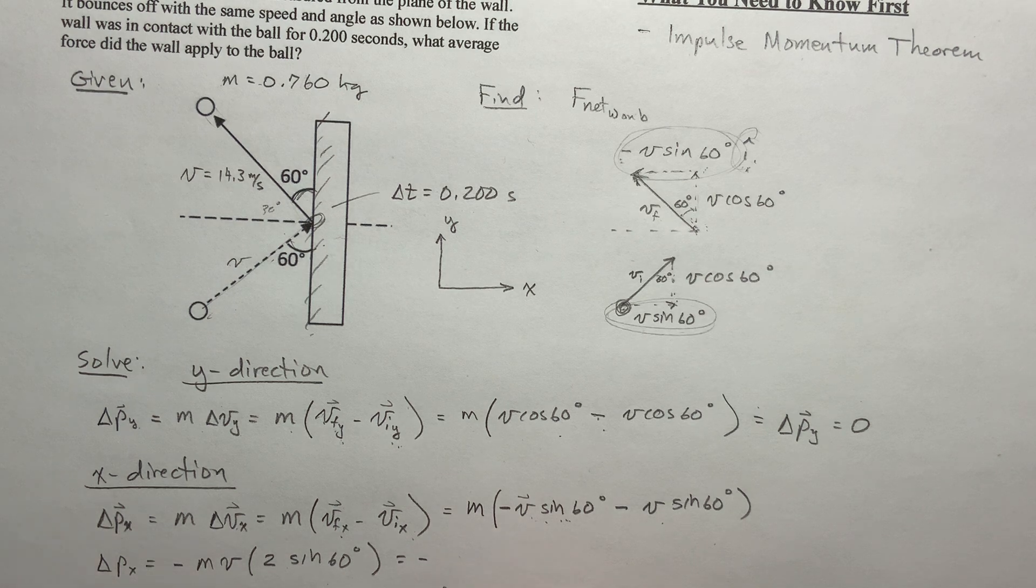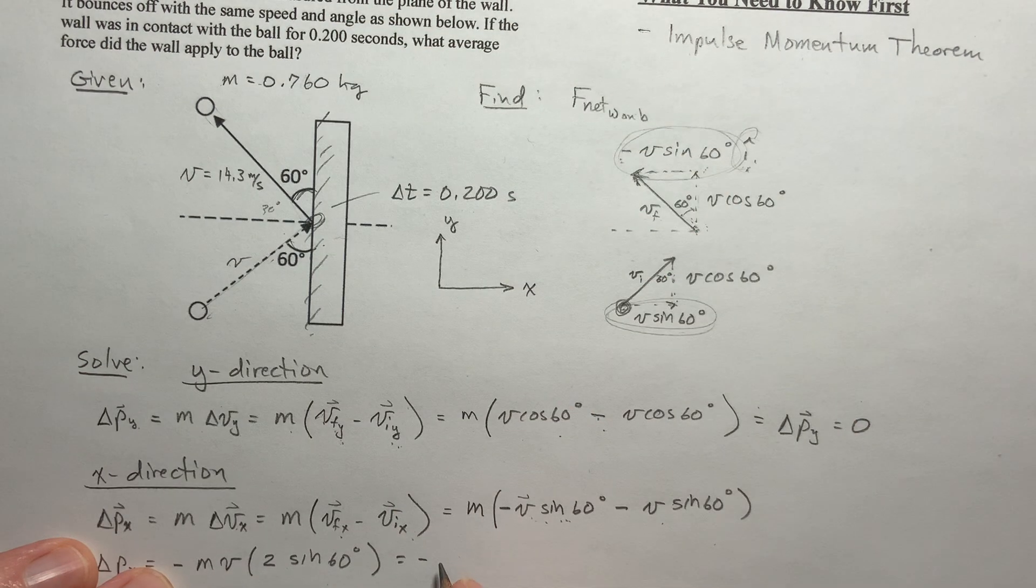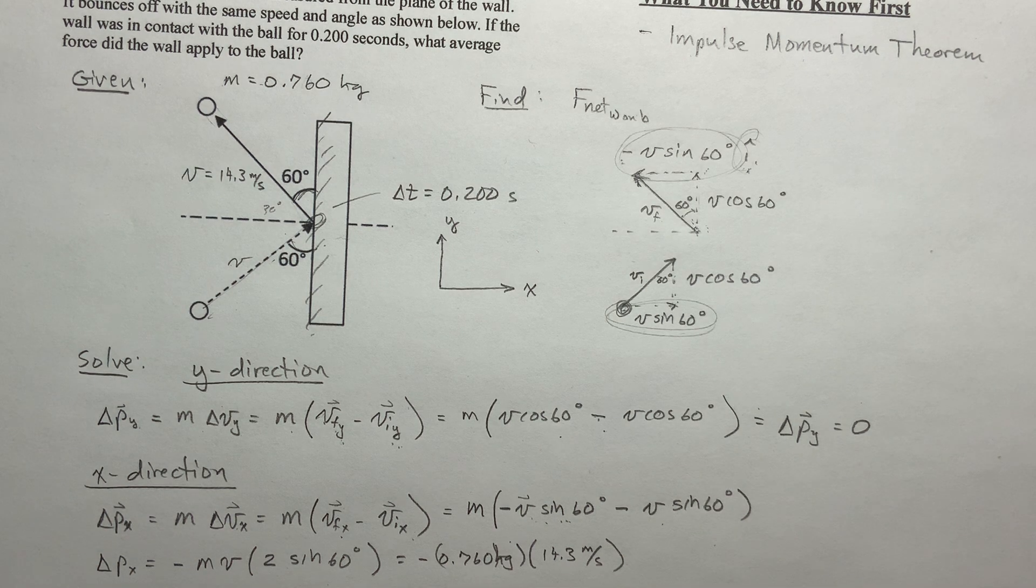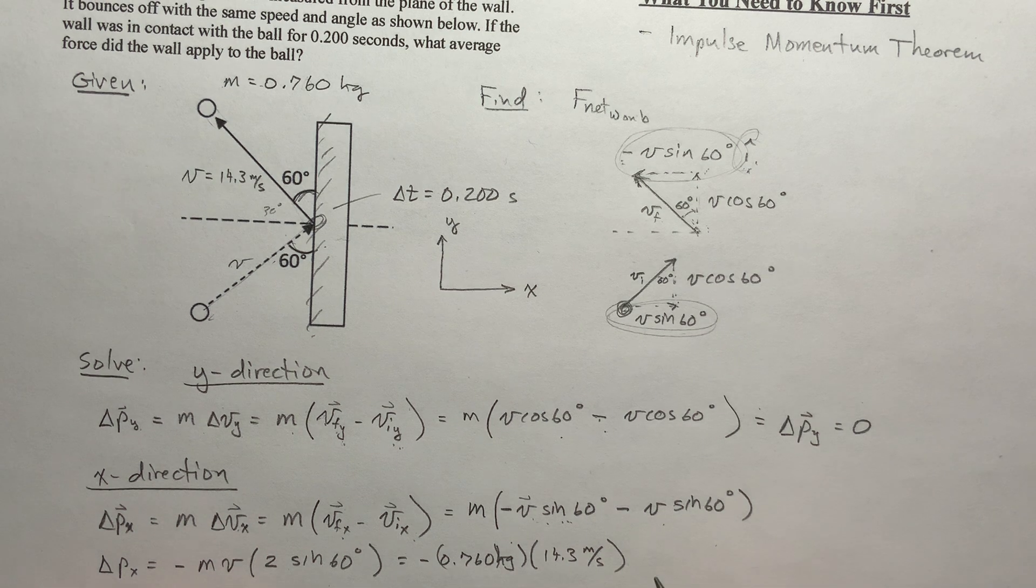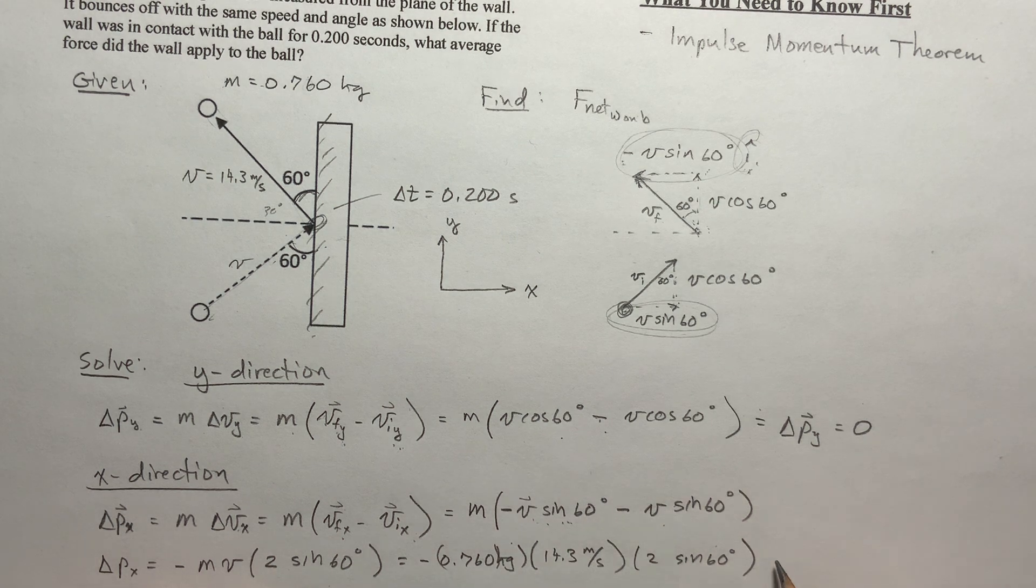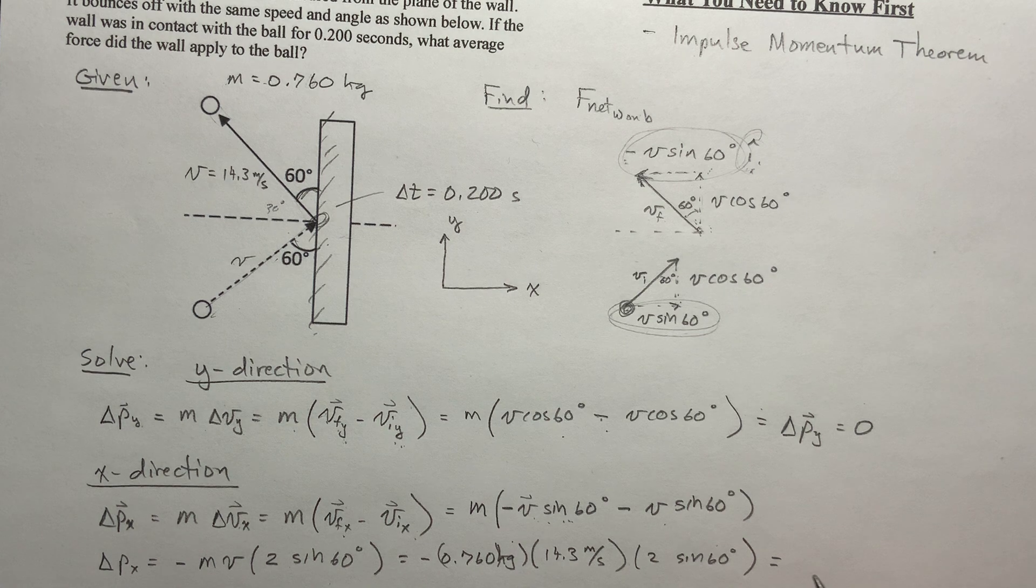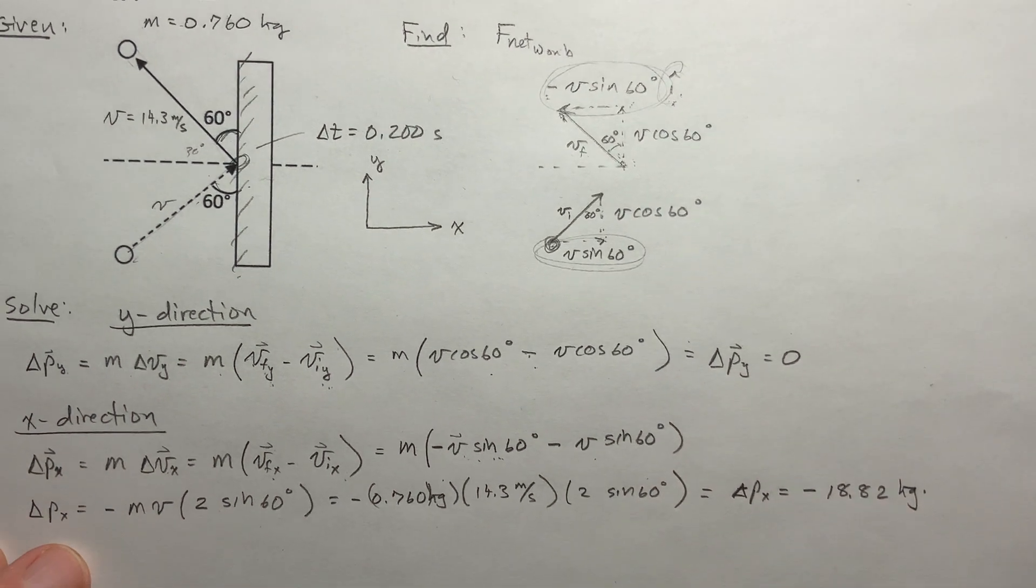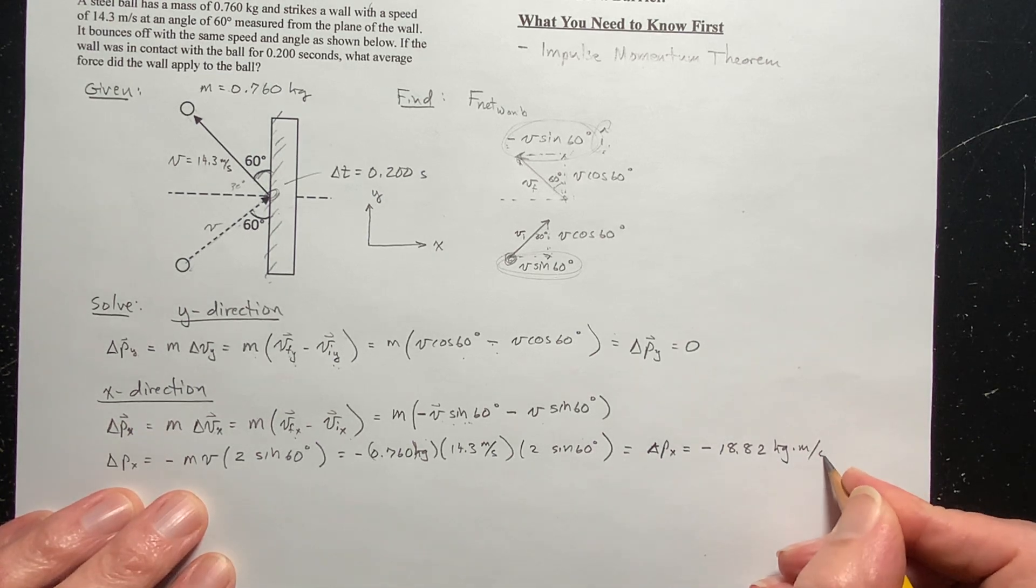And so that's going to be negative. Excuse me, 0.760 kilograms. And then the velocity was given to be 14.3 meters per second. And then this is going to be times 2 sine 60 degrees. And when you plug all that into your calculator, at least when I did, I got a change in momentum, a change in momentum in the x direction, that's equal to negative 18.82 kilogram meters per second. Kilogram meters per second.